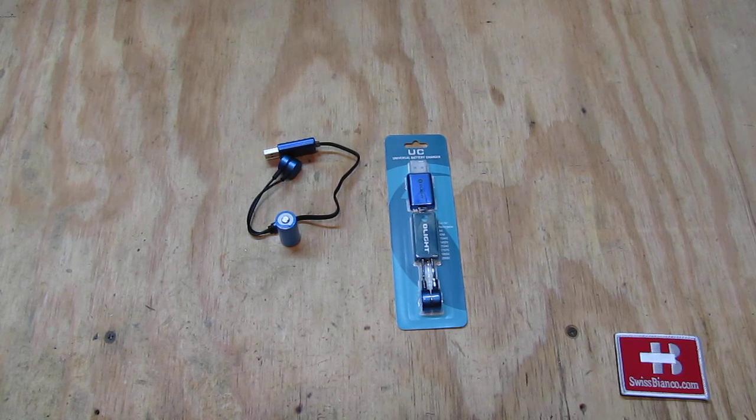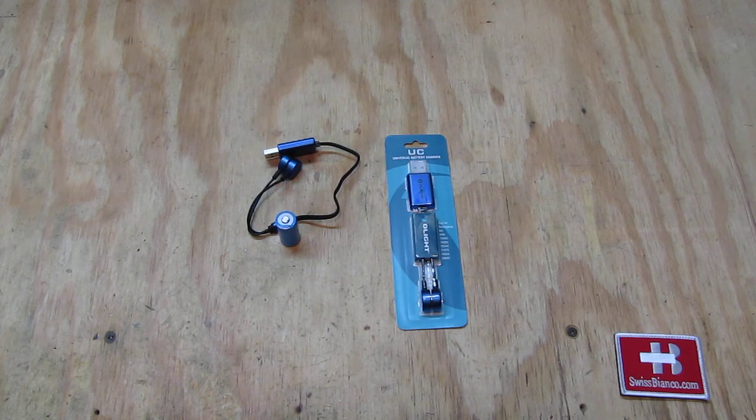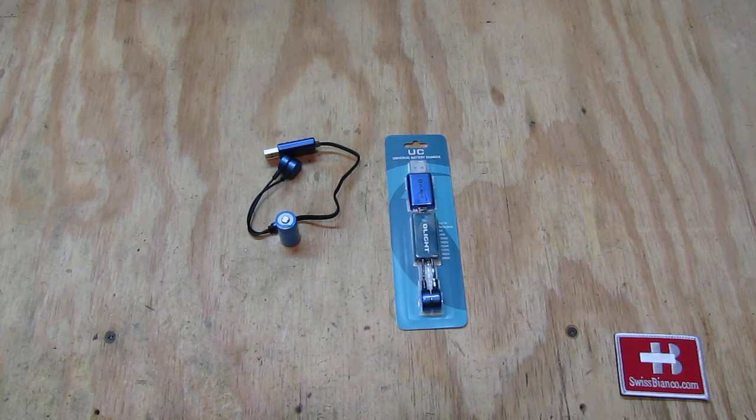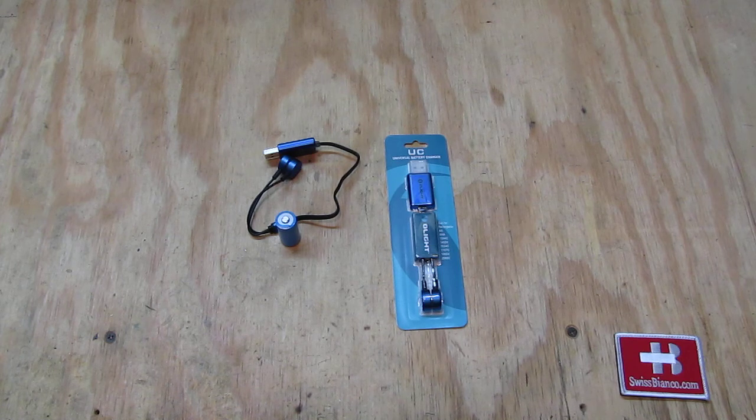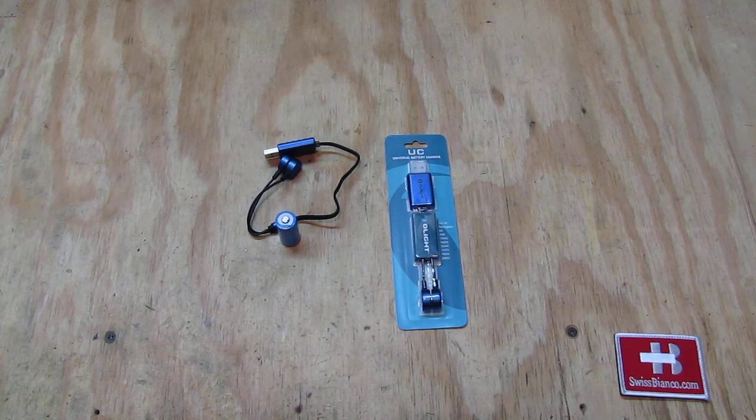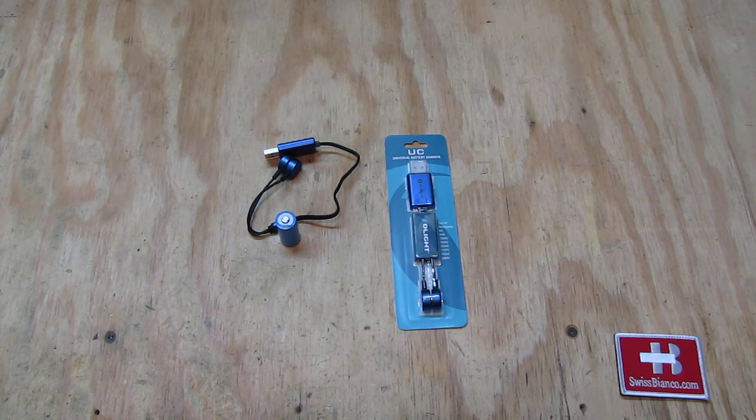It is smaller, it is lighter, and also the price is really good. Usually you pay around seven to nine dollars for that cable. The wall outlet adapter will be quite likely around two dollars from China. So that's about this great new charger from Olight, the UC, the Universal Battery Charger. Thanks for watching.